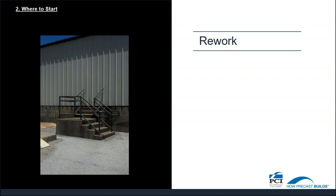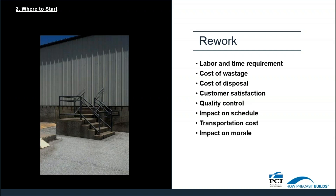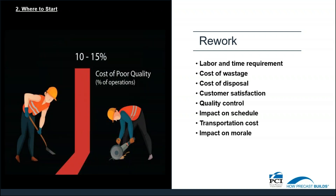R in CLR is for rework, which represents things that need to be redone or worked over and done right. There are many cost implications to rework, including labor personnel and labor time requirements, cost of wastage, cost of disposal, customer satisfaction, quality control, impact on schedule, transportation cost, and impact on morale. According to the American Association of Quality, a general rule of thumb is that costs of poor quality in a thriving company will be about 10 to 15% of operations. Effective quality improvement programs can reduce this substantially, thus making a direct contribution to profits.